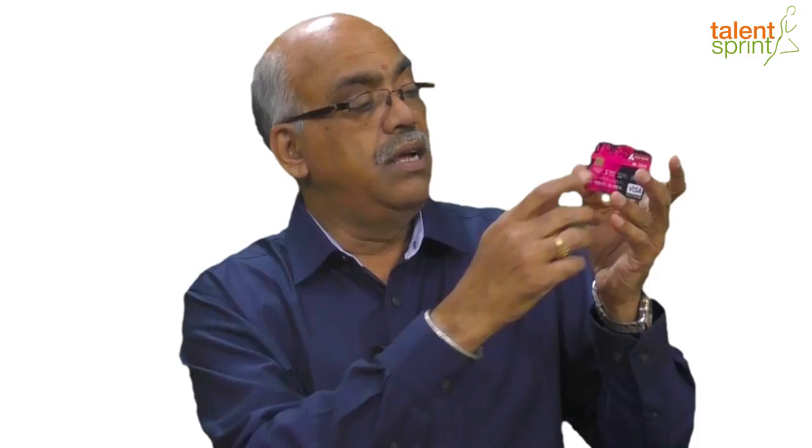You find the name of the service provider — in this case, it is Axis Bank. Then you have the chip, the microelectronic chip. Then you have the 16-digit code number on the card, and you find the date from and to — the expiry period. Then you find the name of the cardholder embossed on the card. This is a bank card from Axis Bank and the service provider is Visa.